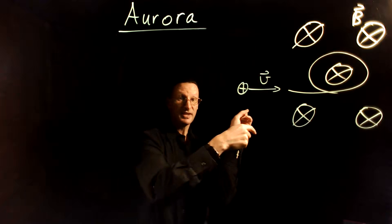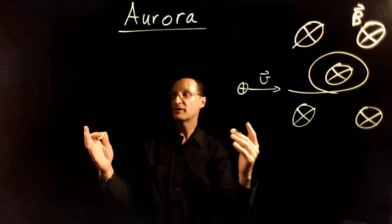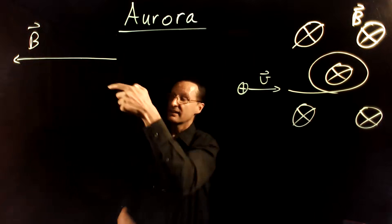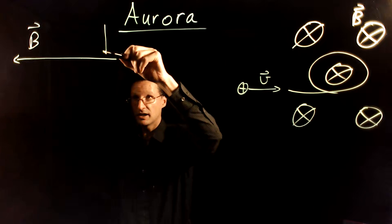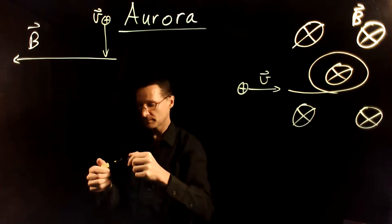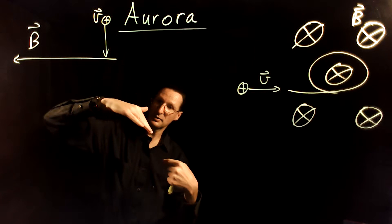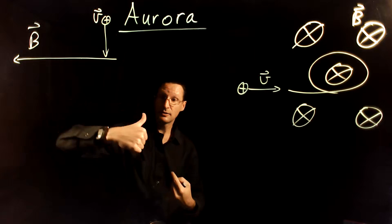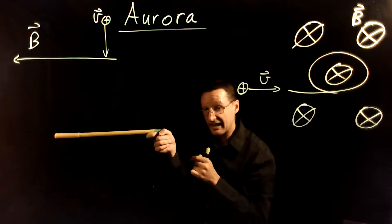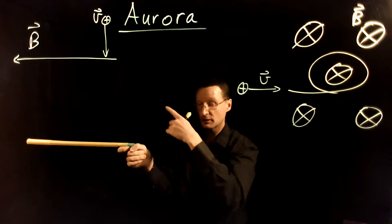The magnetic field lines point into the screen, and the path of the particle is a circle around those field lines. Visualizing this in a different plane: if the magnetic field points this way and the velocity is straight down for a positive charge, we use the right-hand rule — QV into B — and the thumb points into the screen. This particle also travels in a circle around the magnetic field line.